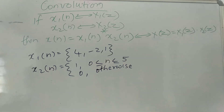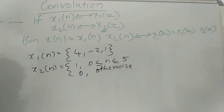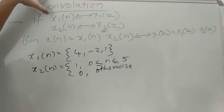Now we will do the next property, which is the convolution property. This is a very important and very easy property. It says that given X of N has a Z transform, convolution means we are going to take two signals and find the Z transform of those two signals and combine them in terms of a product function.